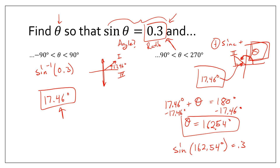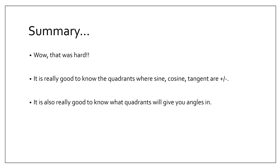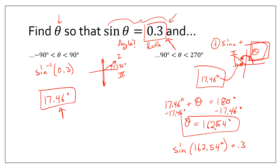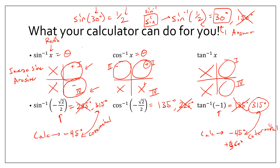Long, complicated video done. I promise we will do much more of this in class. Quick summary: it's really good to know which quadrants sine, cosine, and tangent are positive and negative in, so study your unit circle. You also need to know which quadrants your calculator will give you angles in — have those memorized. We'll talk about all this in class.